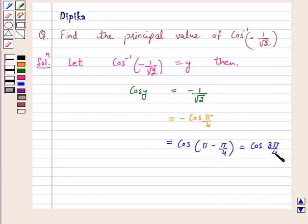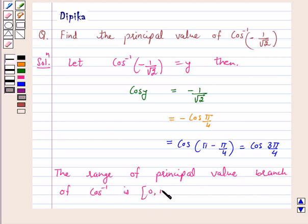Now from the key idea, the range of the principal value branch of cos inverse is closed interval 0 to pi. So this equals cos 3 pi by 4, and cos 3 pi by 4 equals minus 1 over root 2.